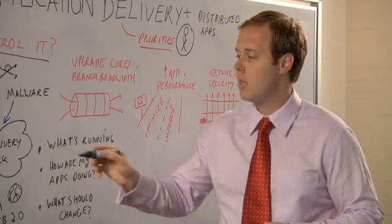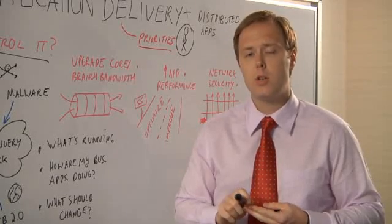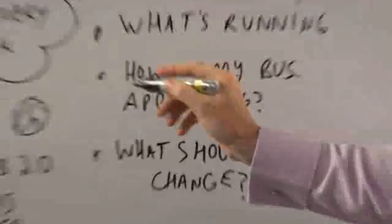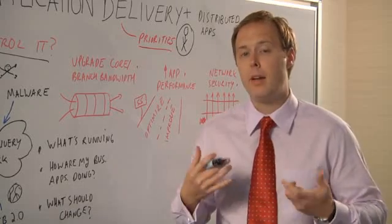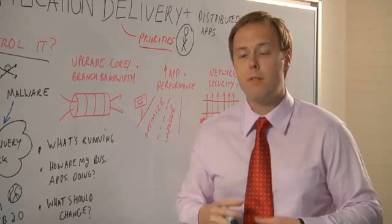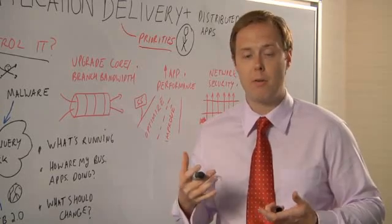The first step is to see what's running on the network—what applications are being run, which users are using certain applications, and where are they being used. The next thing to ask is, how are my applications doing? Do I need to provide quality of service for certain applications to make sure they have a certain priority? Or if there's a problem, can I actually see what's causing those applications to not perform?